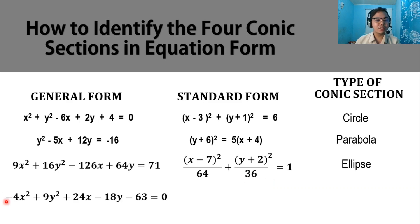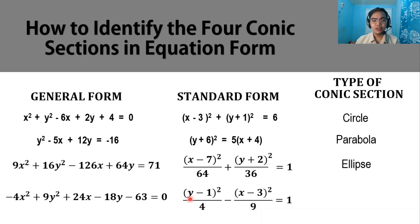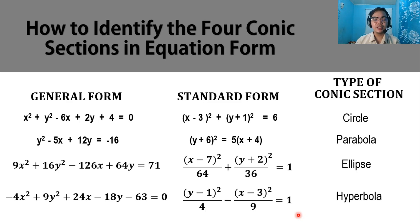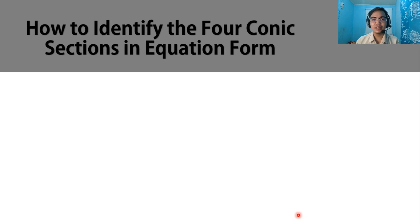The fourth general form is negative 4x squared plus 9y squared plus 24x minus 18y minus 63 equals 0. Transforming this into standard form, we have quantity y minus 1 squared over 4 minus quantity x minus 3 squared over 9 equals 1. This type of conic section is a hyperbola. In this topic, we don't need to undergo a tedious process in transforming equations. So let's look at the characteristics.